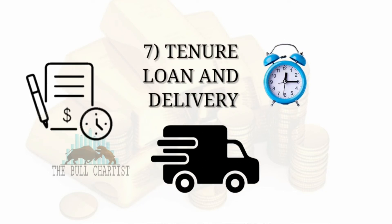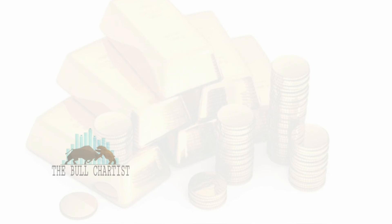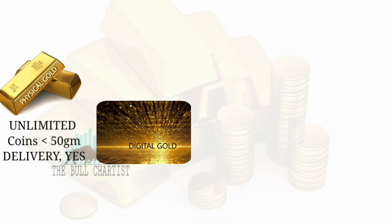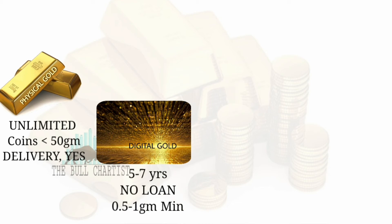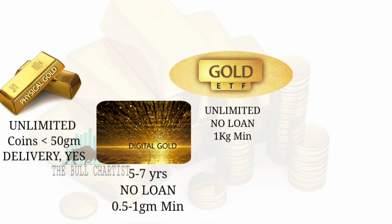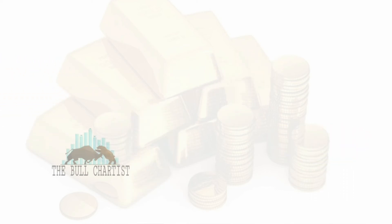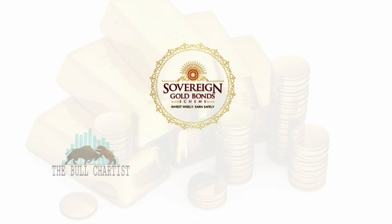Tenure, loan, and delivery: Physical gold has unlimited exit period, coins under 50 grams can be used for loans, and delivery is possible. Digital gold has a 5–7 year exit period, no loan, and minimum 0.5–1 gram for delivery. Gold ETF has unlimited exit period, no loan, and 1 kilogram minimum for delivery. Gold Mutual Fund has unlimited exit period, no loan, and no delivery. Sovereign Gold Bond has an 8-year exit period, loan is possible, and no delivery.